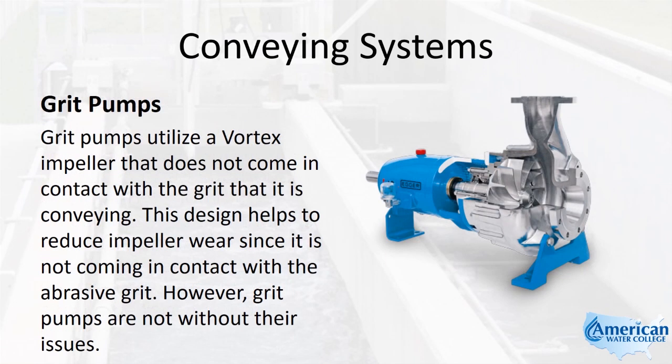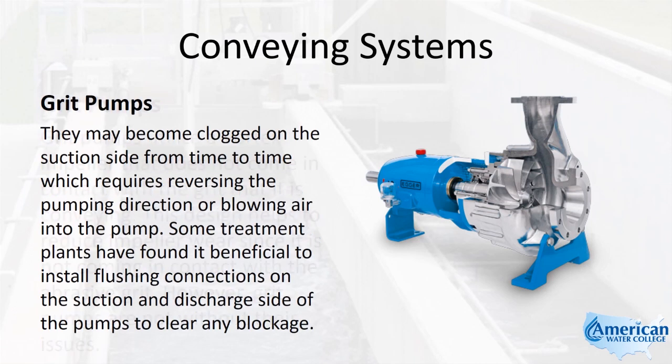Grit pumps utilize a vortex impeller that doesn't come in contact with the grit that it's conveying. This design helps to reduce impeller wear since it's not coming in contact with the abrasive grit. However, grit pumps are not without their issues. They may become clogged on the suction side from time to time, which requires reversing the pumping direction or blowing air into the pump. Some treatment plants have found it beneficial to install flushing connections on the suction and discharge side of the pumps to clear any blockage.